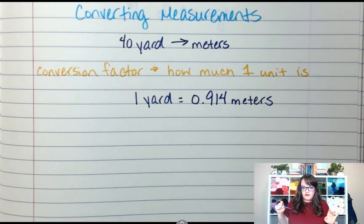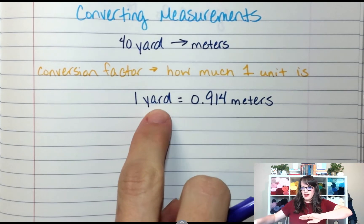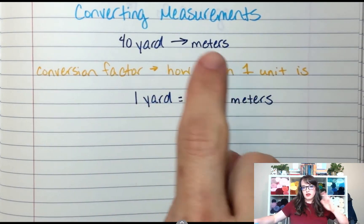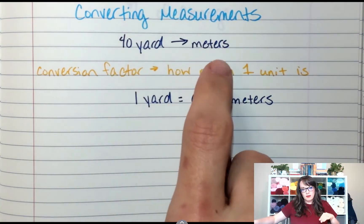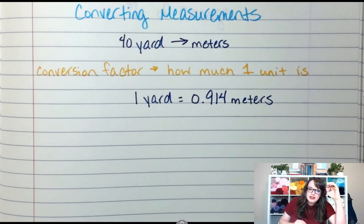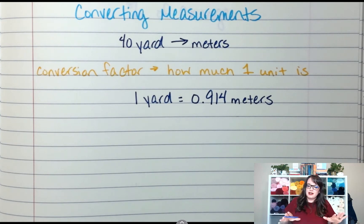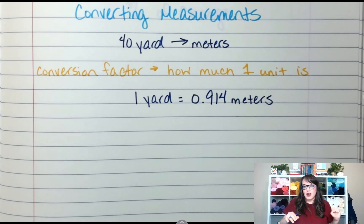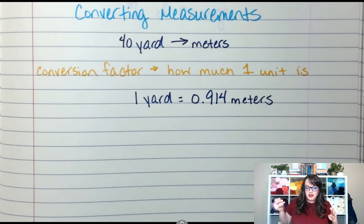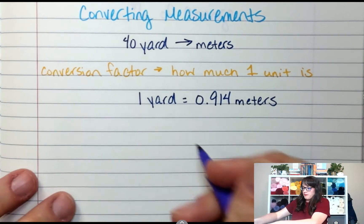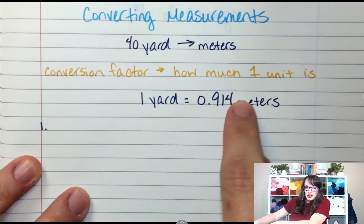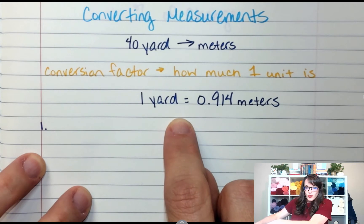You need these two pieces of information: our conversion factor of one yard to meters, and we want to know 40 yards to how many meters. Your instinct might say 'oh, multiply' or 'oh, divide' — it's really easy to make a mistake when you just go with your gut. So here's my recommendation: your first step is to take your conversion factor and write it as a ratio.